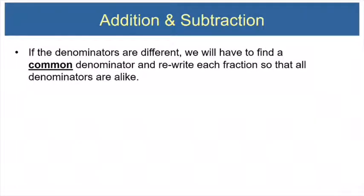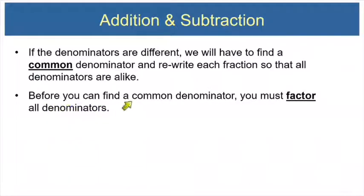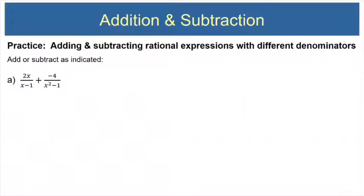The real question is what happens when the denominators are different. If the denominators are different, we will have to find a common denominator and rewrite each fraction so that all the denominators are exactly alike. Before you can find that common denominator, you've got to factor all of the denominators you're starting with. The best way to learn how to write the common denominator is just to see it done a few times, so let's jump into a couple of examples.